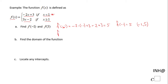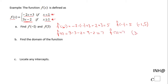Next, we find f(3). Since 3 is greater than or equal to 1, we use the second piece. We get 3 times 3 minus 2, which is 9 minus 2, which equals 7. So f(3) = 7, giving us the ordered pair (3, 7).